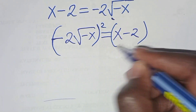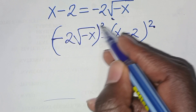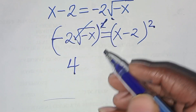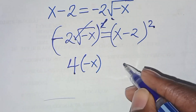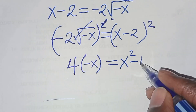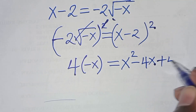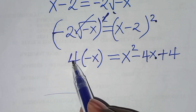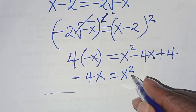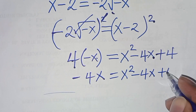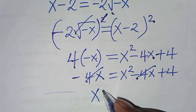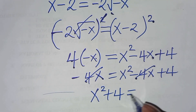The next step: let's square both sides. Minus 2 squared is 4, and square root of minus x squared eliminates the square root, giving minus x. So 4 times minus x equals x minus 2 squared, which is x squared minus 4x plus 4. Therefore minus 4x equals x squared minus 4x plus 4. The 4x terms simplify, leaving us with x squared plus 4 equals 0.